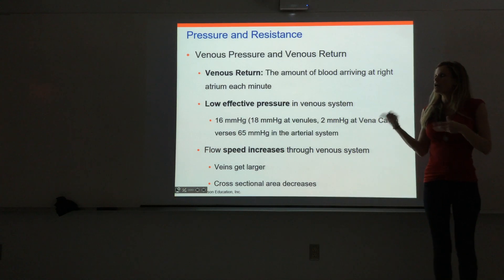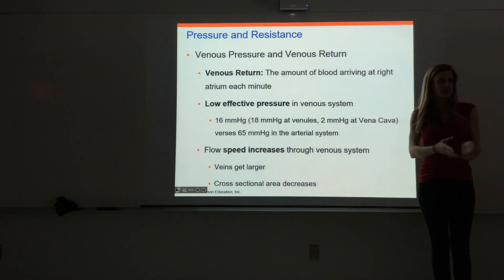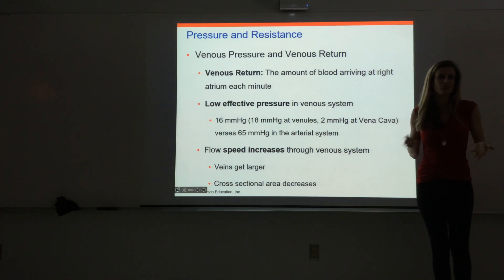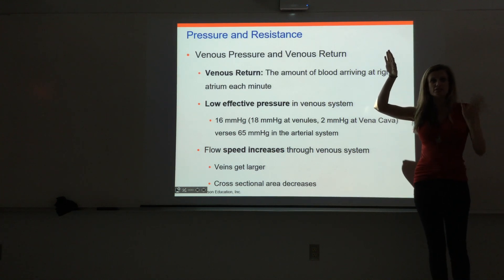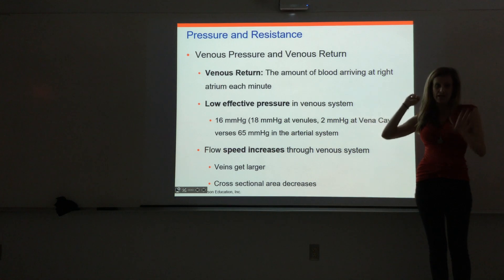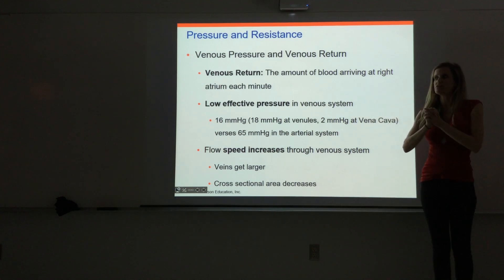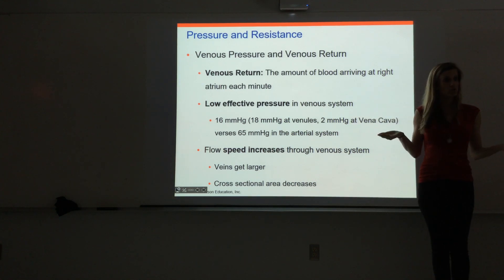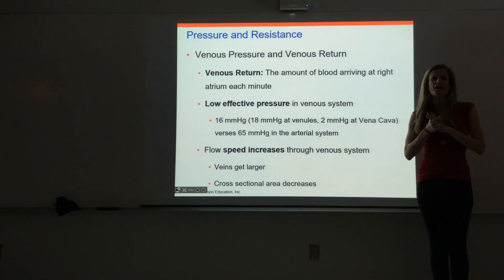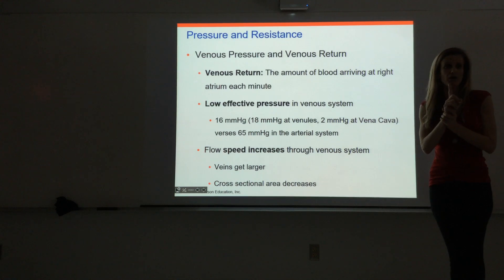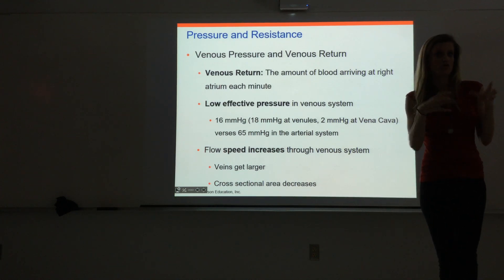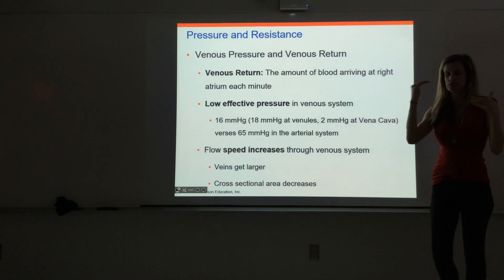We talked about arterial blood pressure — the pressure in the arteries — which is what we normally just call blood pressure. We have systolic and diastolic: systolic is the high number during systole, diastolic is the low number during diastole. We talked about hypertension versus hypotension, and calculating the mean arterial pressure — using one value for pressure in the arteries instead of both diastolic and systolic.